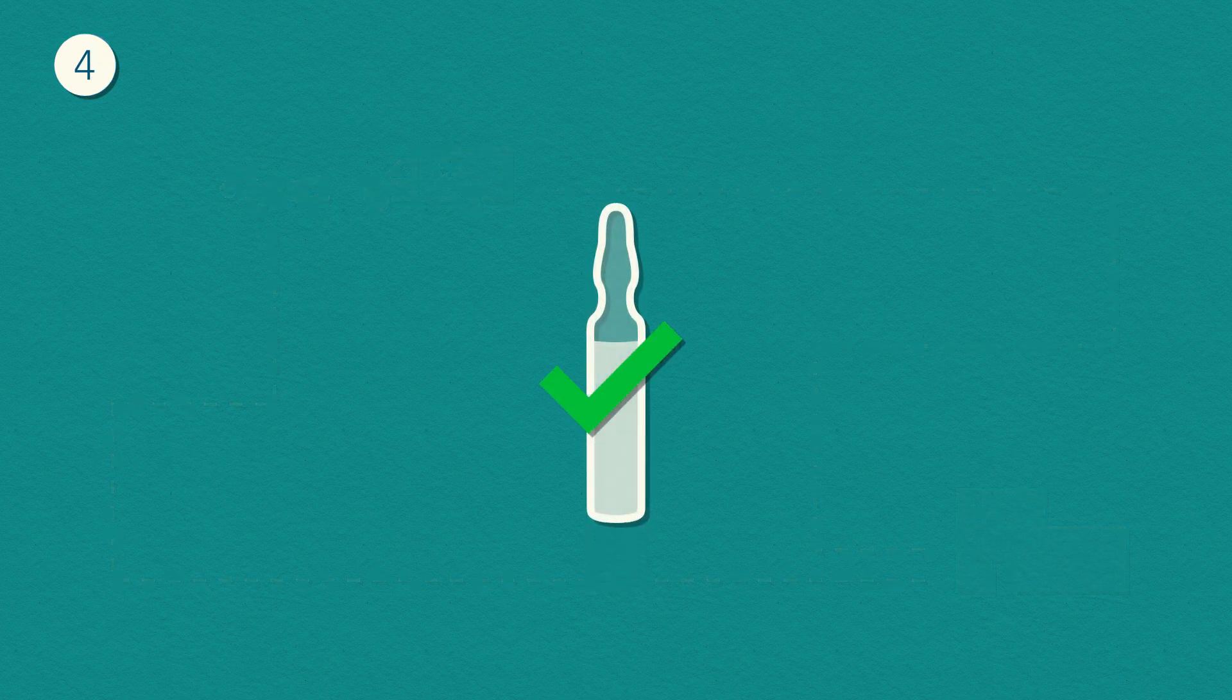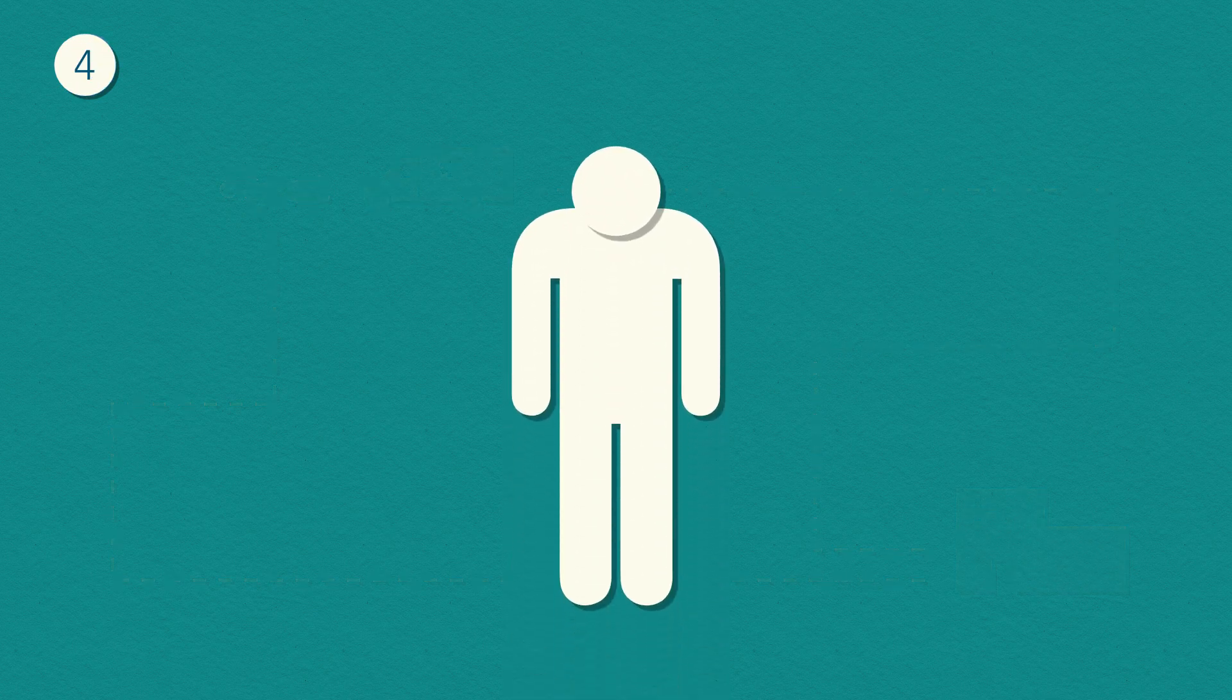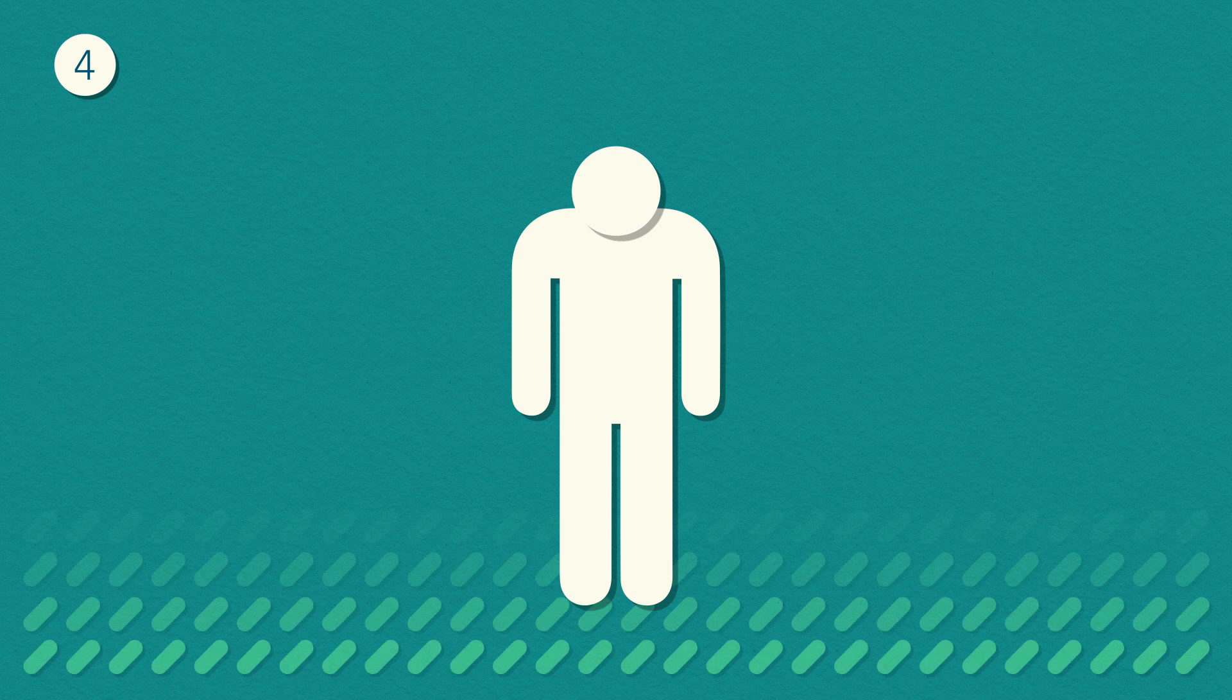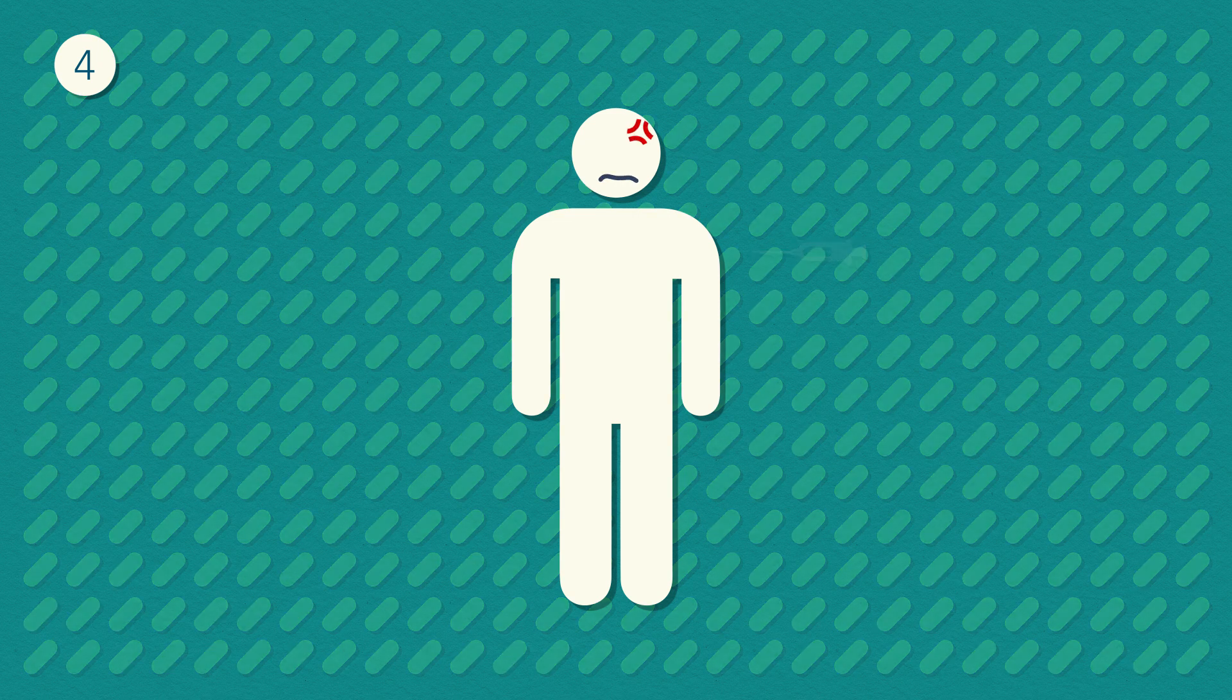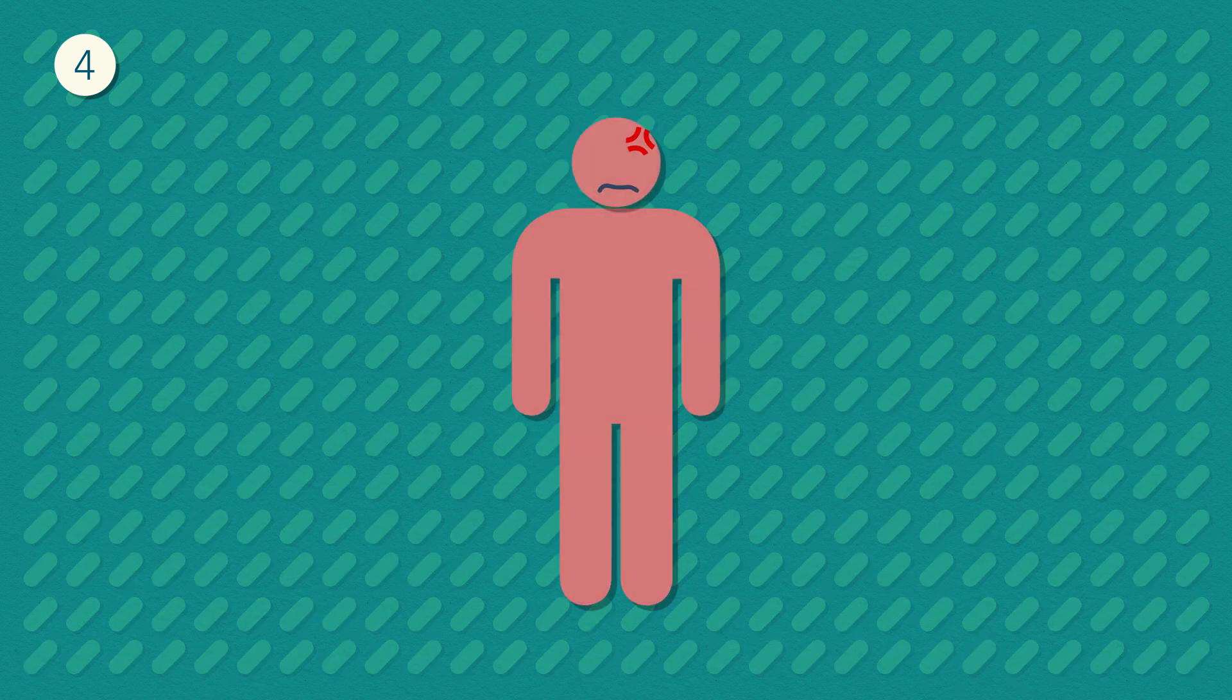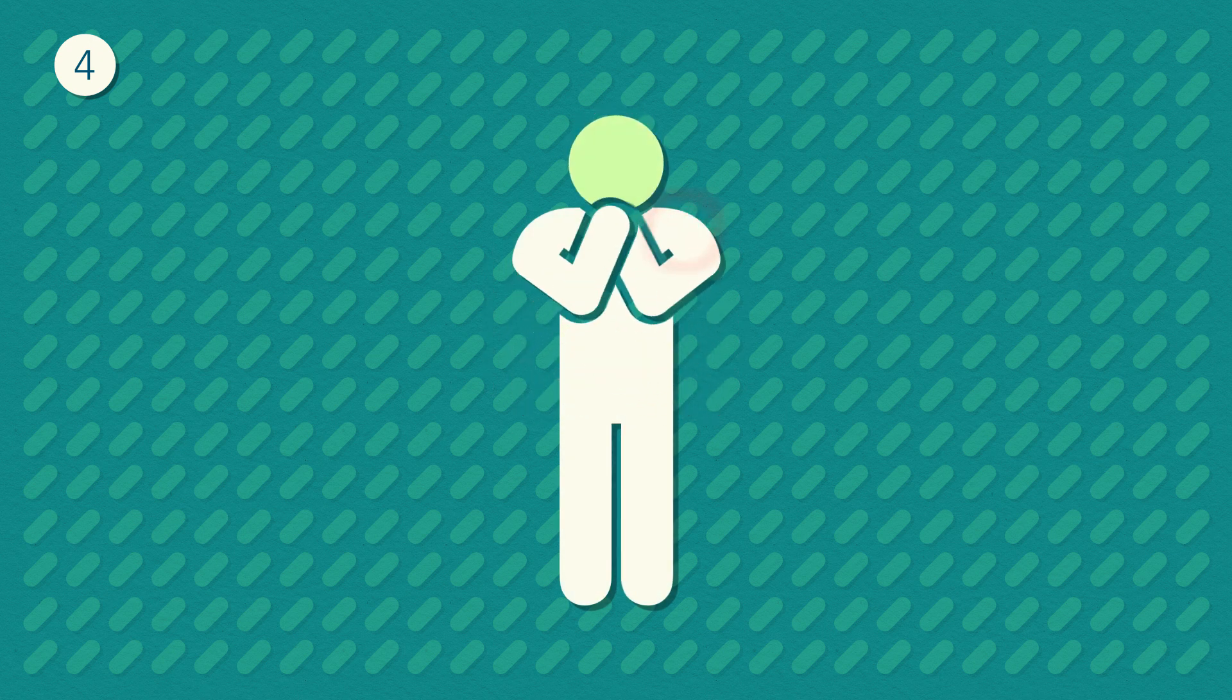Fourth, naloxone is a safe drug, but it can have some side effects. When someone uses opioids for a long time, naloxone can cause very uncomfortable withdrawal symptoms, including irritability, anger, sweating, shivering, muscle pain, throwing up, and diarrhea.